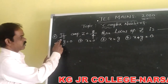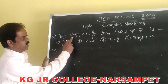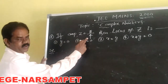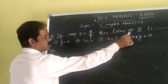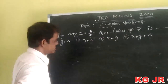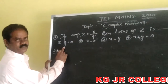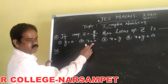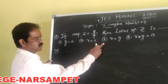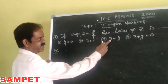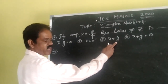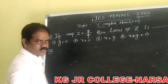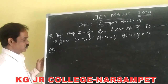Next problem: if the amplitude of z equals π/4, then the locus of z is — first option: y equals 0; second option: x equals 0; third option: x equals y; fourth option: x plus y equals 0.